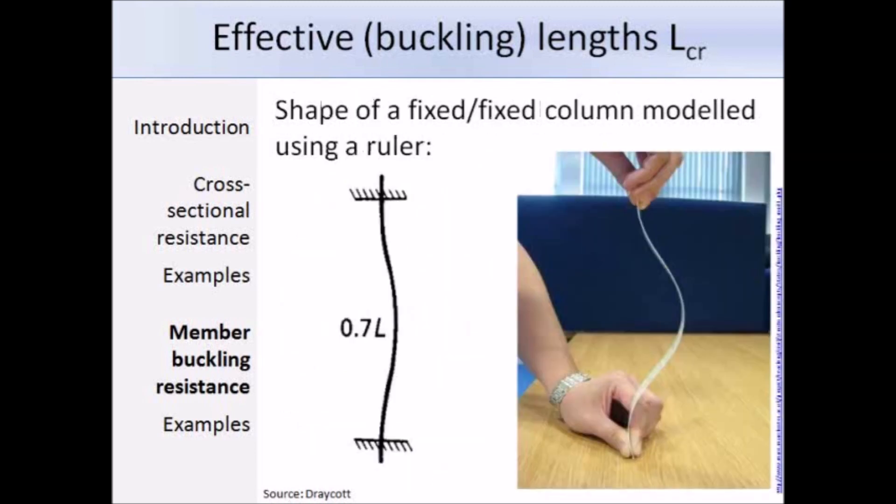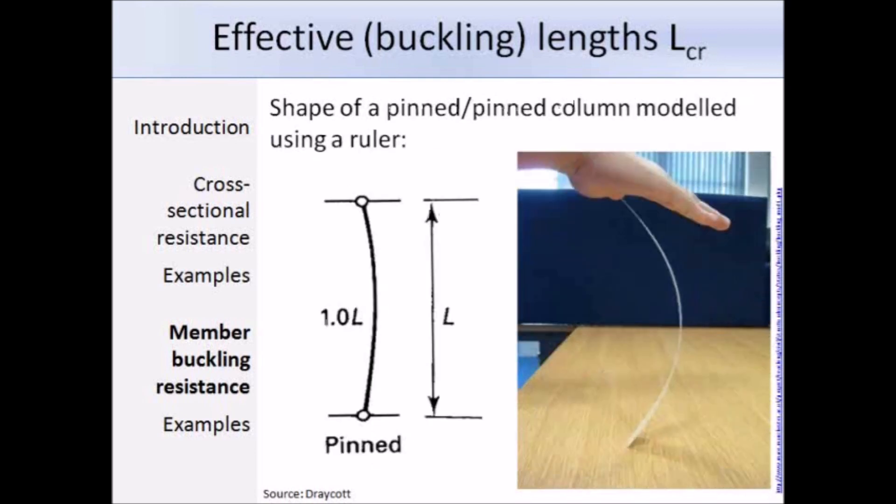Here using a ruler we can model end conditions. Here the end conditions are both fixed and we get this shape. The effective length is 0.7 times the total length, and you can see that near the fixed restraints the column cannot buckle, therefore it's only the central 70% of the beam which is affected by buckling. Here we're using the ruler to model a column with two pin ends, and the effective length is equal to the total length of the column. Here we can see how the effective length can be reduced by adding lateral restraint.